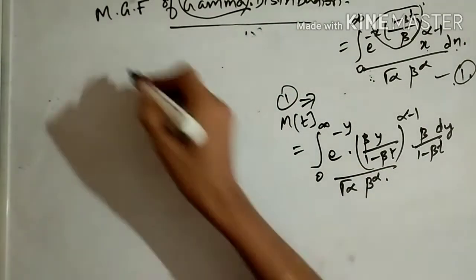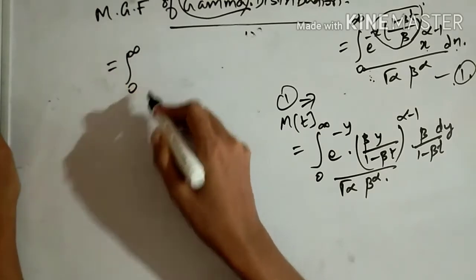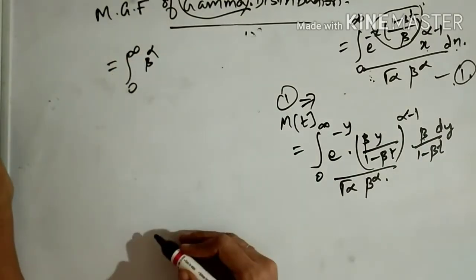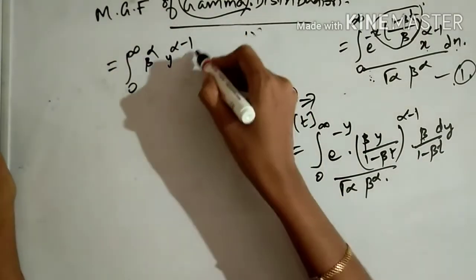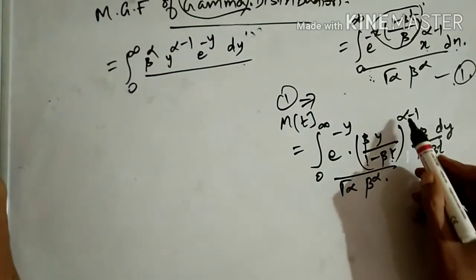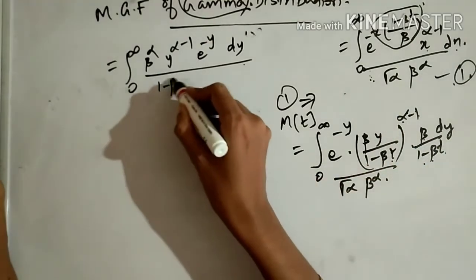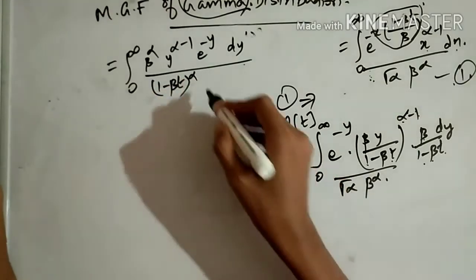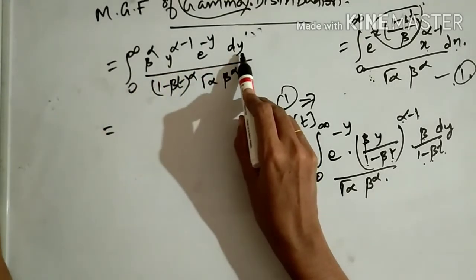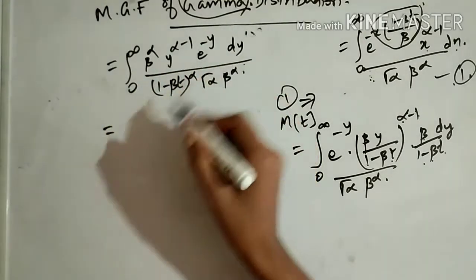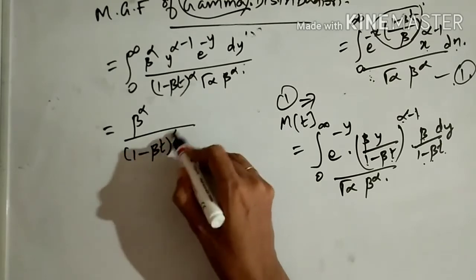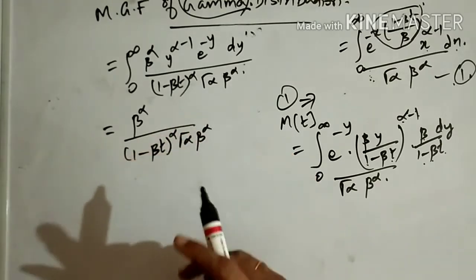Simplifying: we have β^(α-1) times β^1, which gives β^α, then y^(α-1), e^(-y), dy. The denominator has (1 - βt)^(α-1) times (1 - βt)^1, giving (1 - βt)^α, times Γ(α) β^α. We take everything outside the integral, leaving β^α divided by (1 - βt)^α Γ(α) β^α.